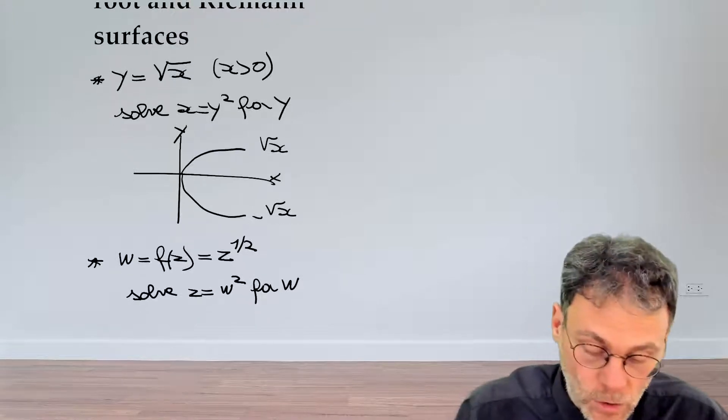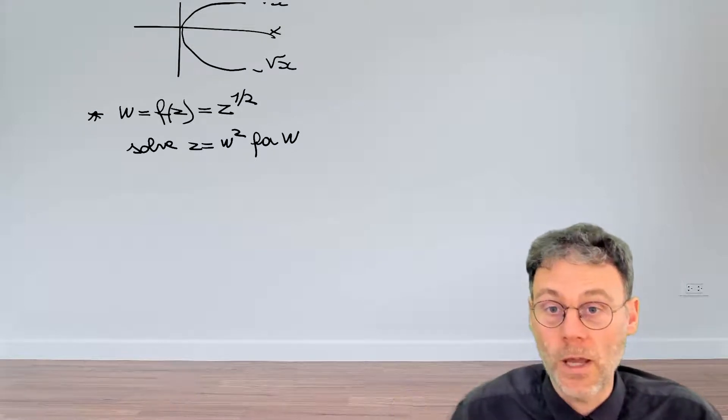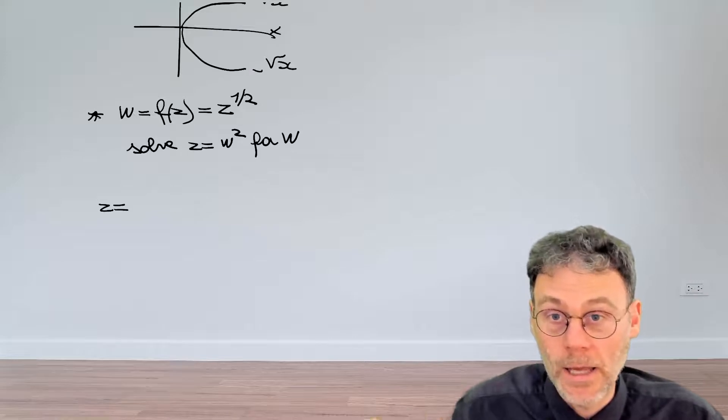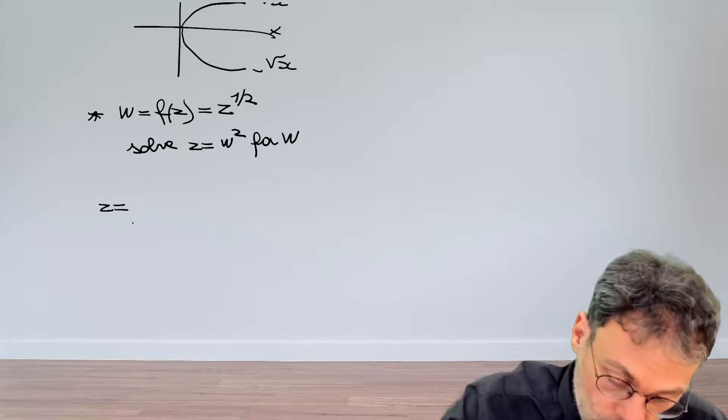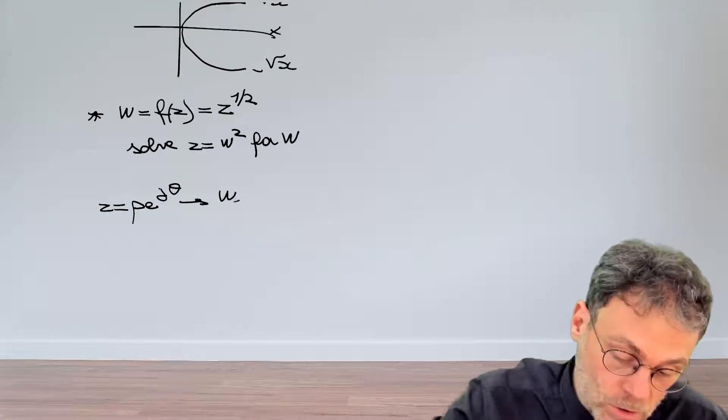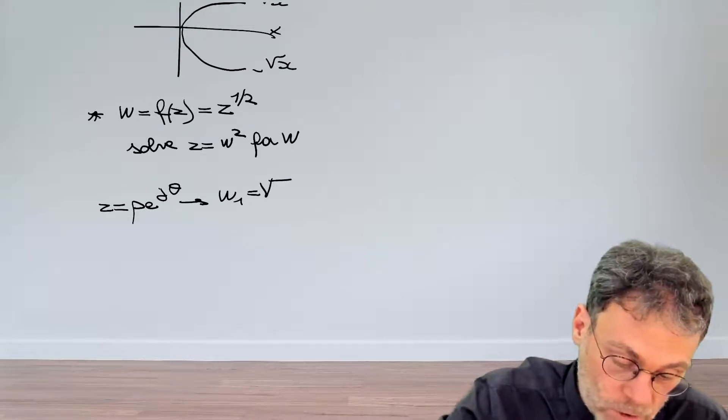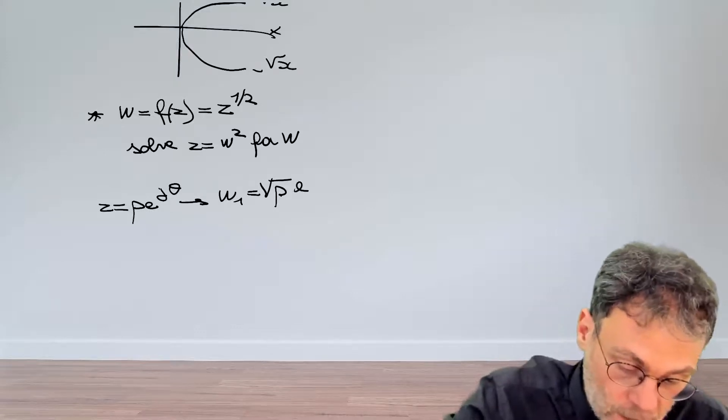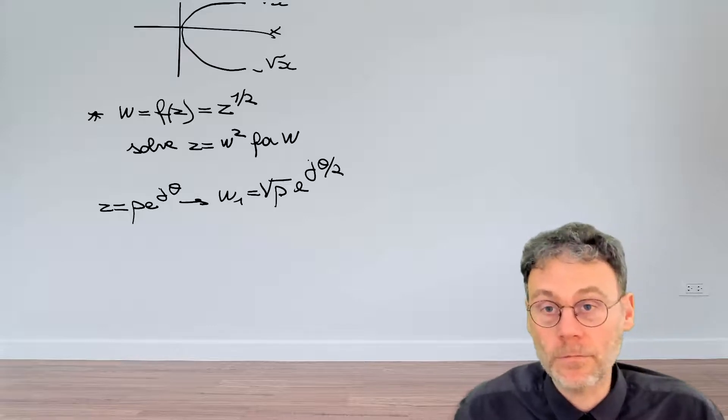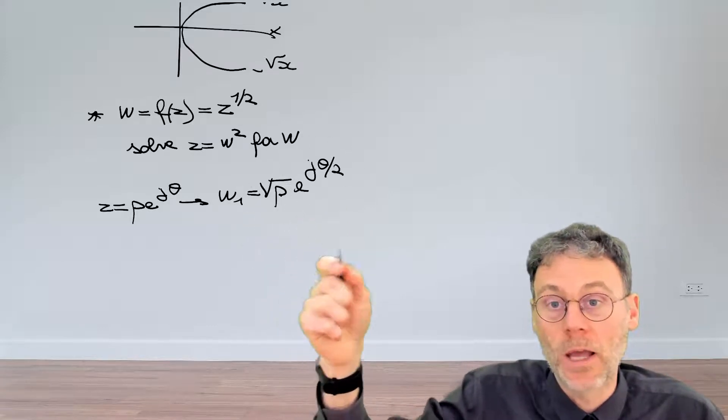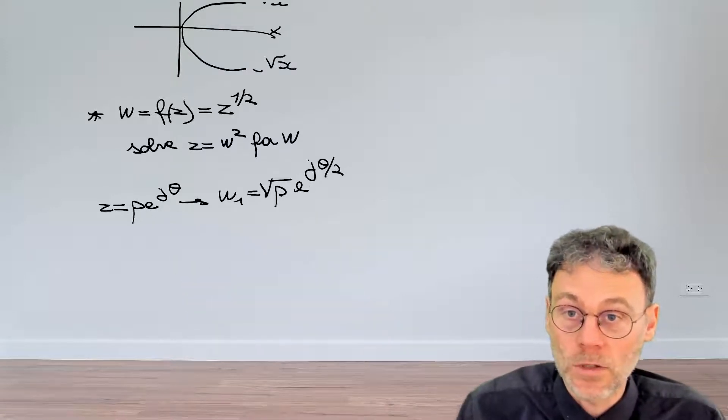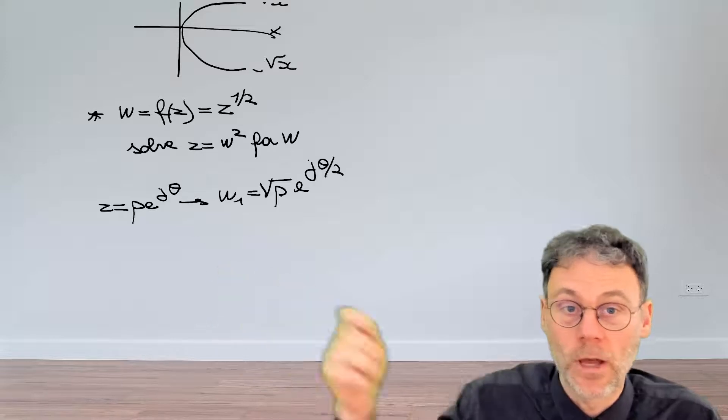I hope you still all remember how to take the square root of a complex number. What you need to do is write that complex number in its polar form. So z is ρ exponential jθ. And then you can find the solution by taking the real-valued square root of the modulus, and then by taking the argument, the angle, and dividing that by 2. And then you can easily verify, if you take this number and multiply it with itself, that you get back to z. So this is one possible solution to that equation.